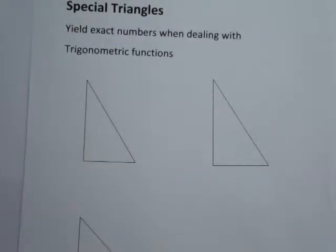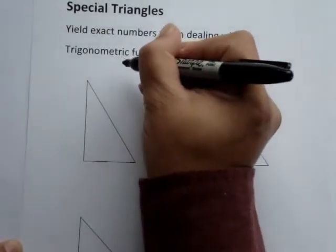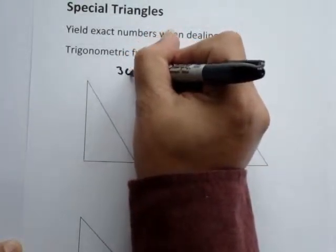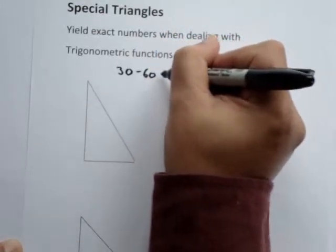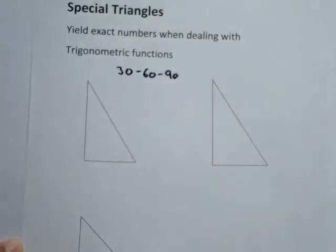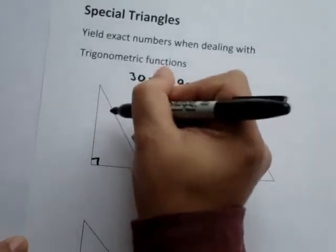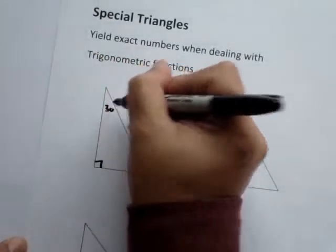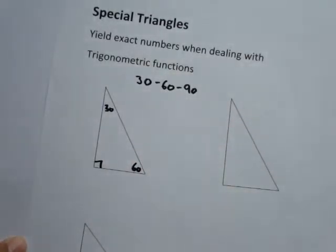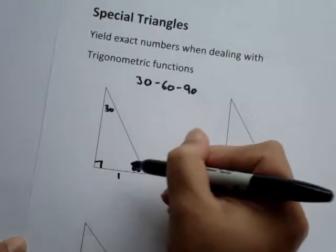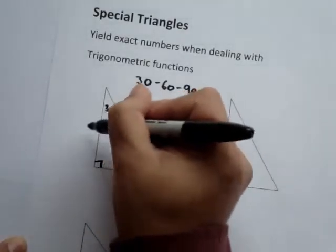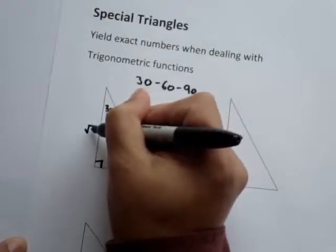Special triangles yield exact numbers when dealing with trigonometric functions. If we have a triangle with angles 30, 60, and 90 degrees — with the 90 at the bottom, 30 at the top, and 60 degrees at the other corner — then if we have a length of 1 and a length of 2, then the third side would be the square root of 3.